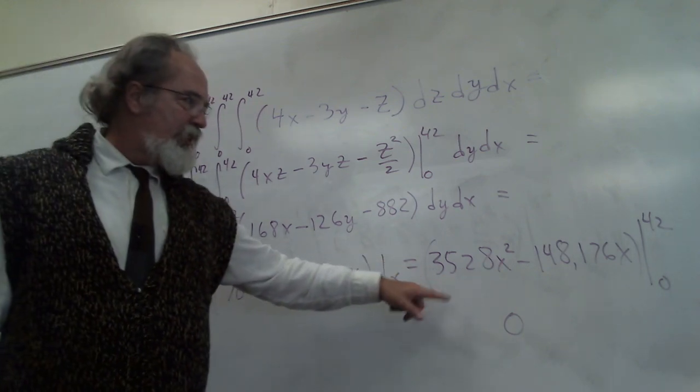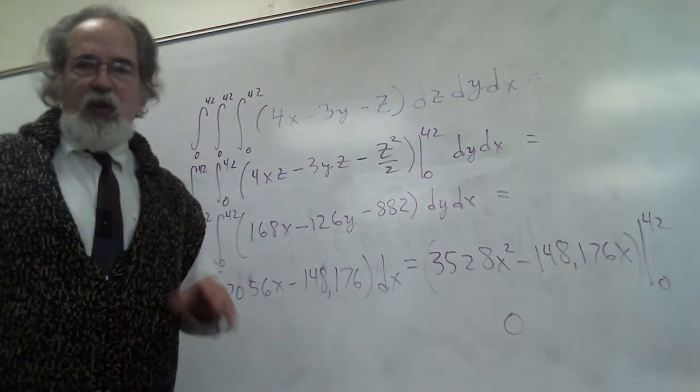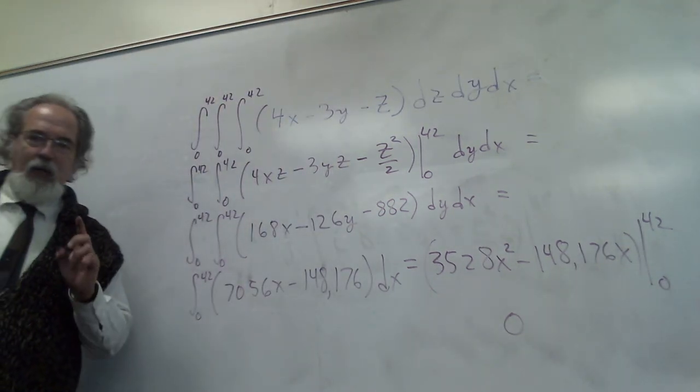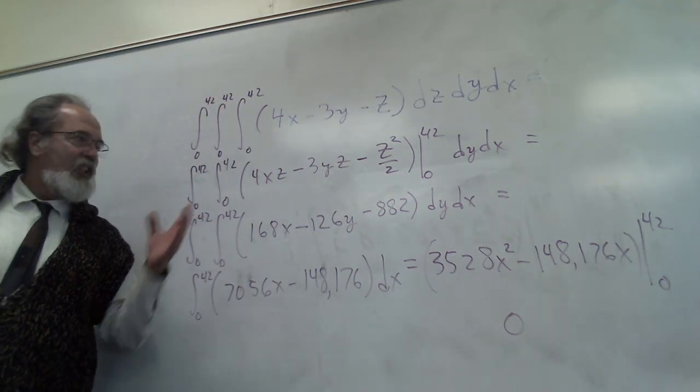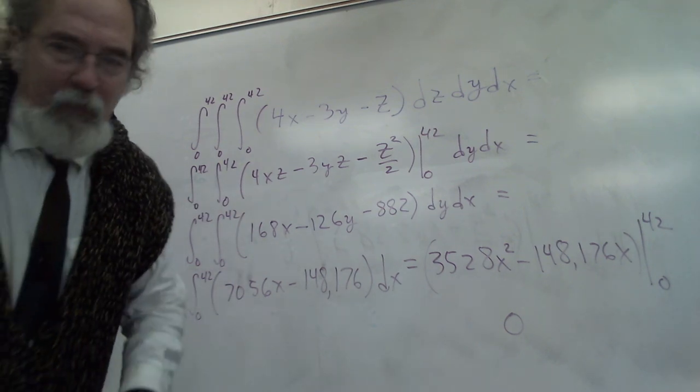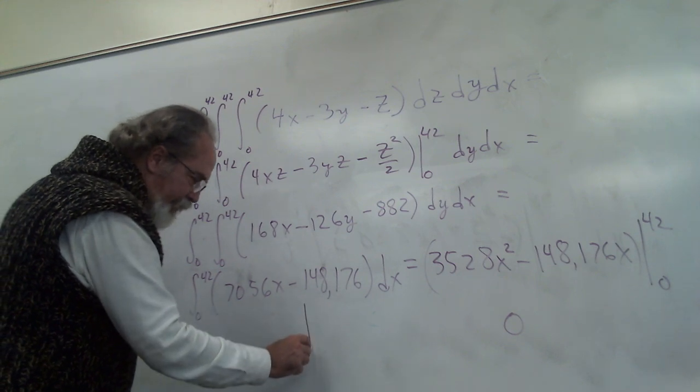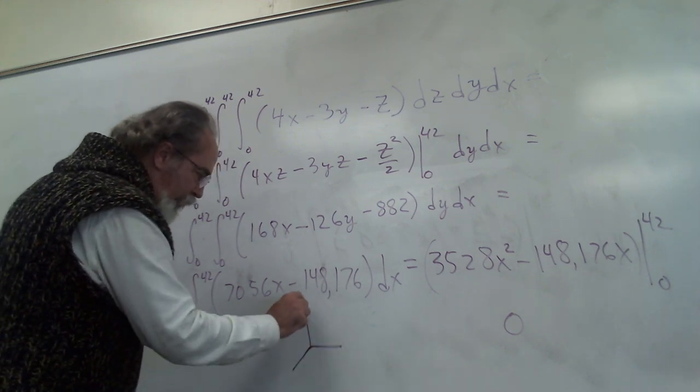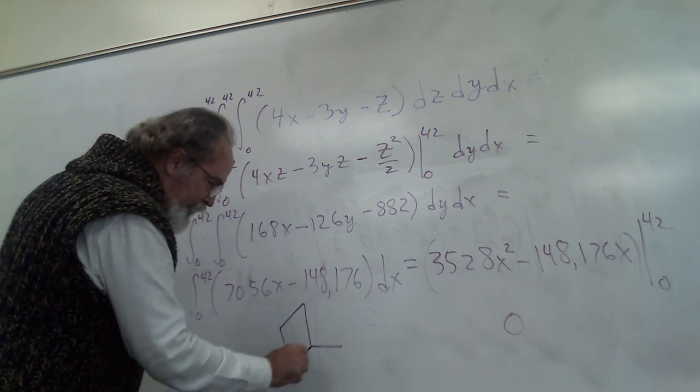Now I'm going to integrate that with respect to x. I do this, integrate 0 to 42, the answer comes out to be 0. The whole class paused. They wouldn't say the answer because they thought all this work to get a 0. But here's why: the domain is a cube, it's a 42 by 42 by 42 cube.